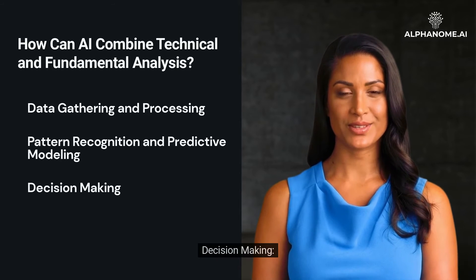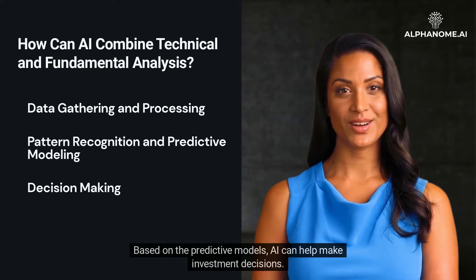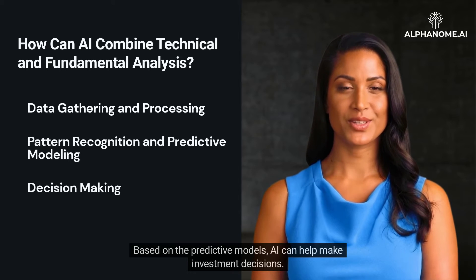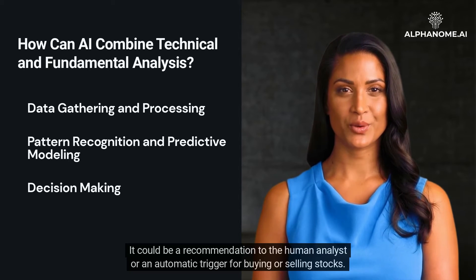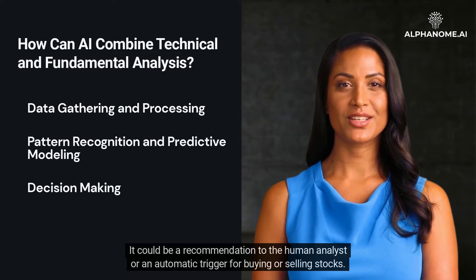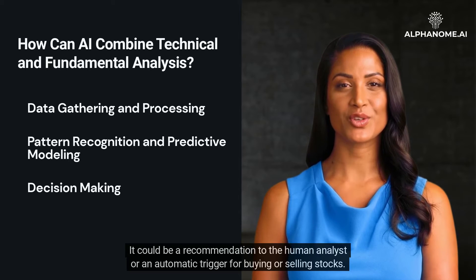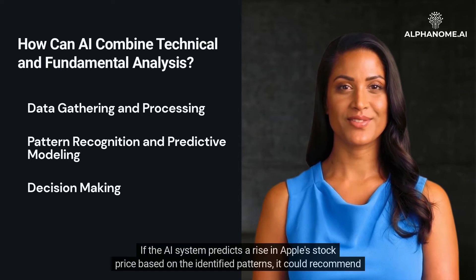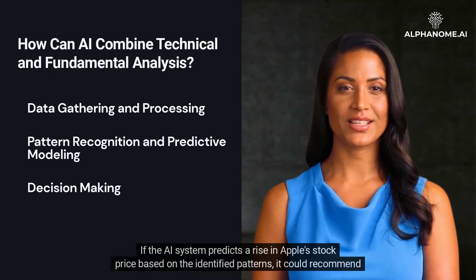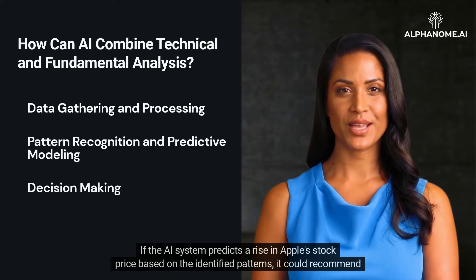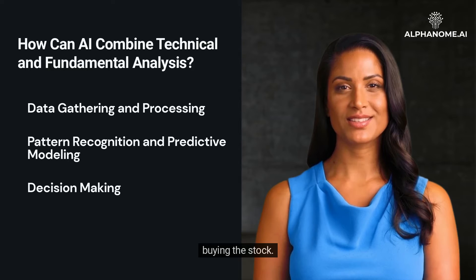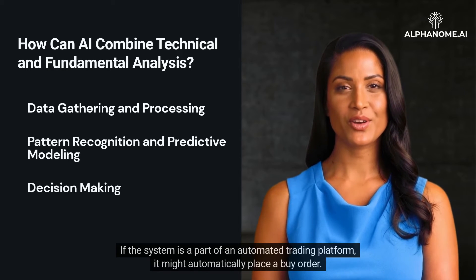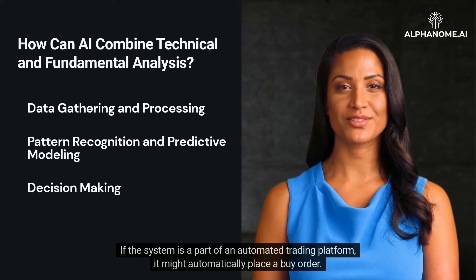Decision Making: Based on the predictive models, AI can help make investment decisions. It could be a recommendation to the human analyst or an automatic trigger for buying or selling stocks. If the AI system predicts a rise in Apple's stock price based on the identified patterns, it could recommend buying the stock. If the system is part of an automated trading platform, it might automatically place a buy order.